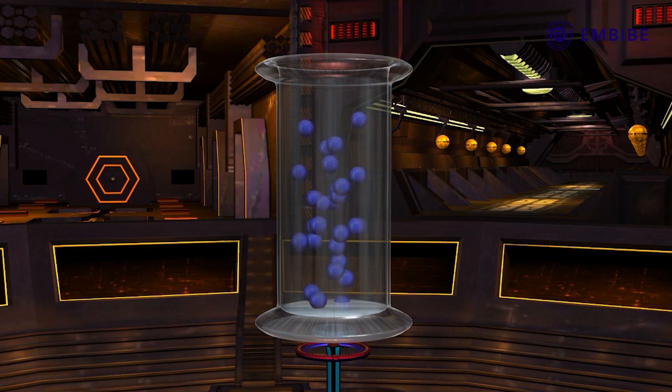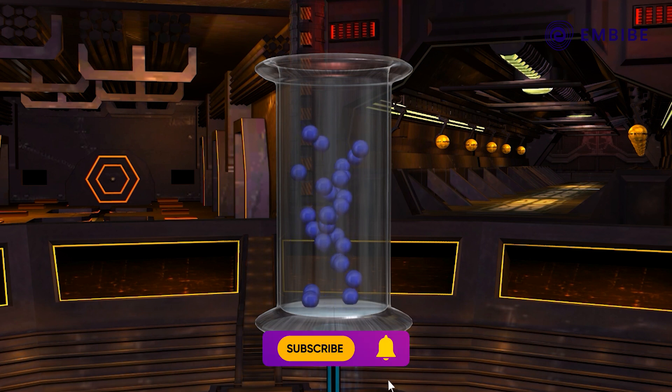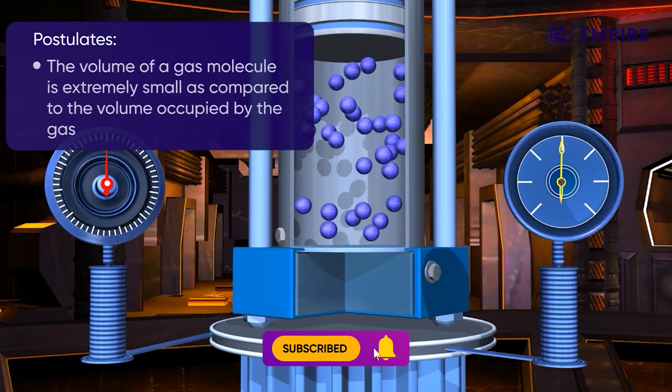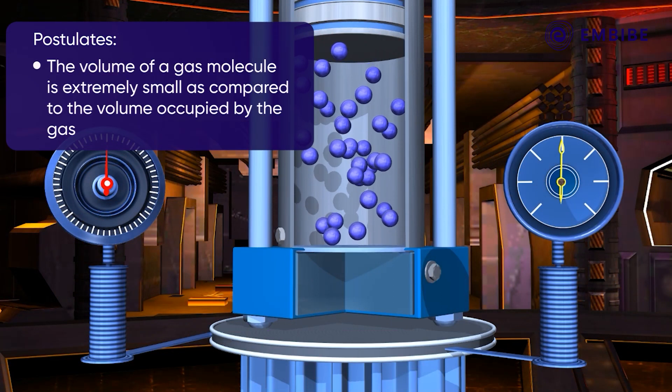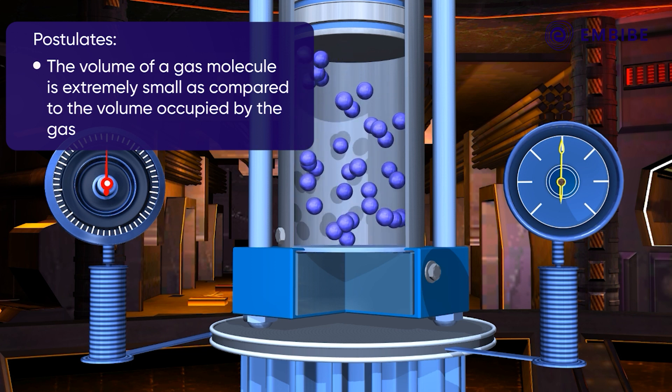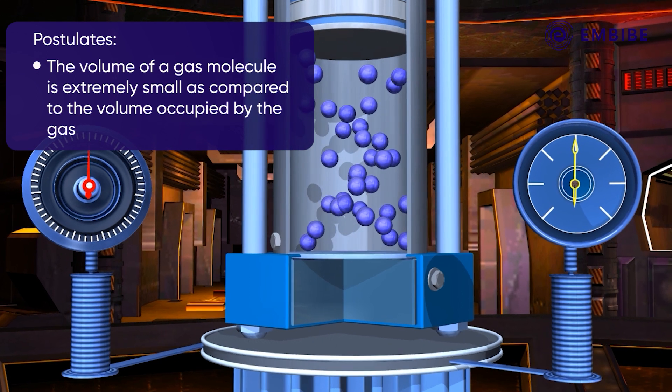Number four: The volume of a gas molecule is extremely small as compared to the volume occupied by the gas or volume of the container. The average intermolecular distance is considerably large as compared to the diameter of the molecule.